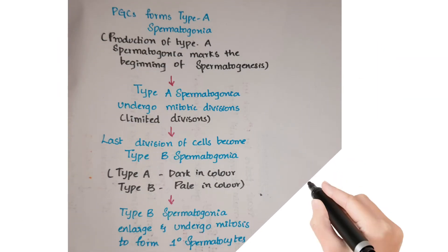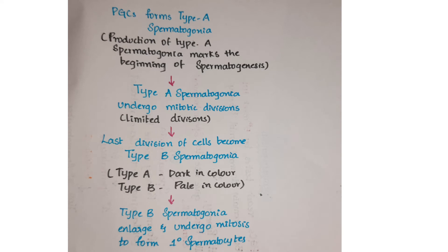First, let's discuss spermatocytosis. Primordial germ cells form type A spermatogonia. A key point to note is that production of type A spermatogonia marks the beginning of spermatogenesis. The type A spermatogonia undergo a limited number of mitotic divisions to form clones, and the last division of cells becomes type B spermatogonia.